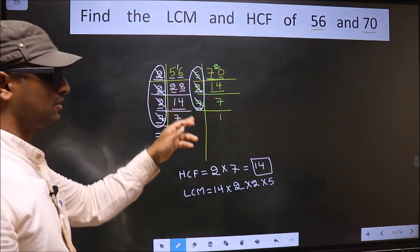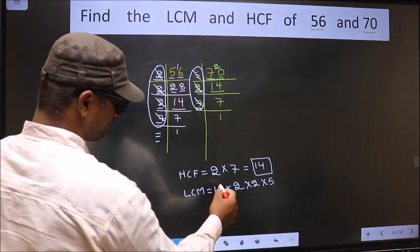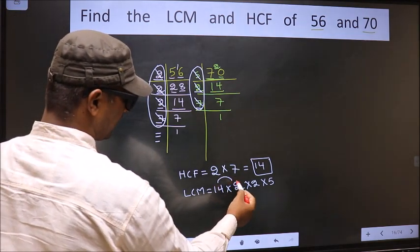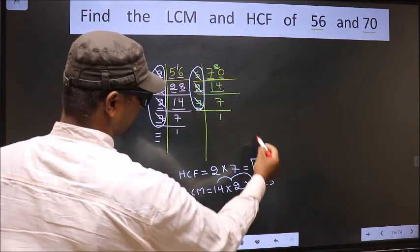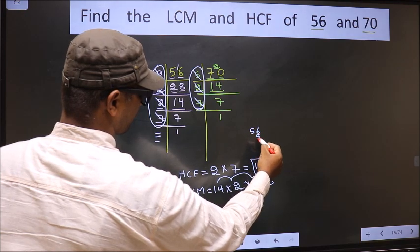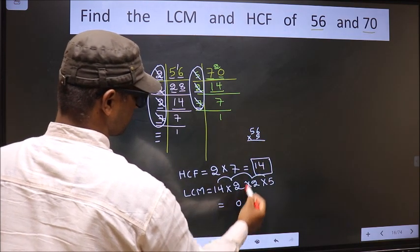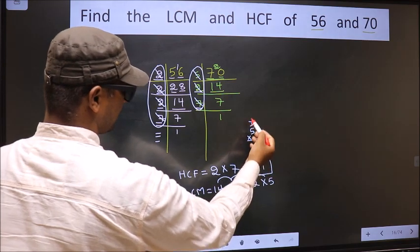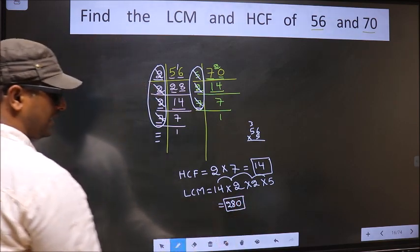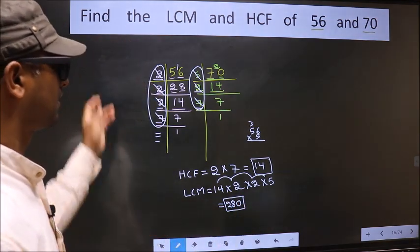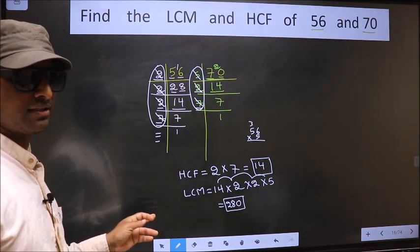So our LCM is 14 times 2, 28 times 2, 56 times 5. 5 times 6 is 30, so 0, carry 3. 5 times 5 is 25 plus 3 is 28. So 280 is our LCM. Am I clear? Clear.